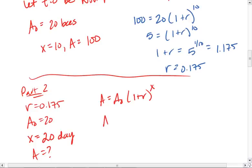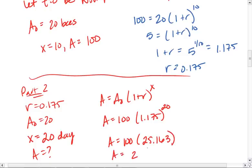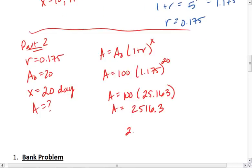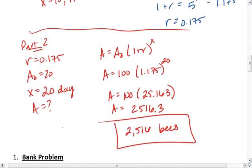We get A equals 20 times 1.175 to the 20th. A equals 20 times 25.163. Or we can round and say that we have 2,516 bees. Poor Ms. Mason.